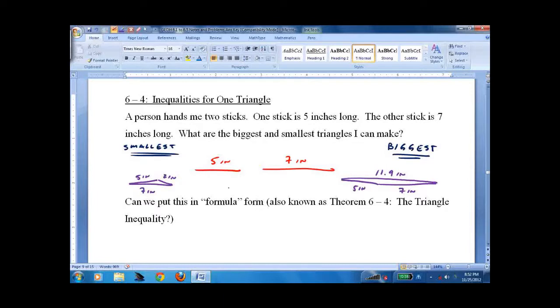So given a five and a seven inch, the length would be greater than two inches but less than 12 inches. Less than, not equal to, less than. And over here, greater than, not equal to, greater than two inches.